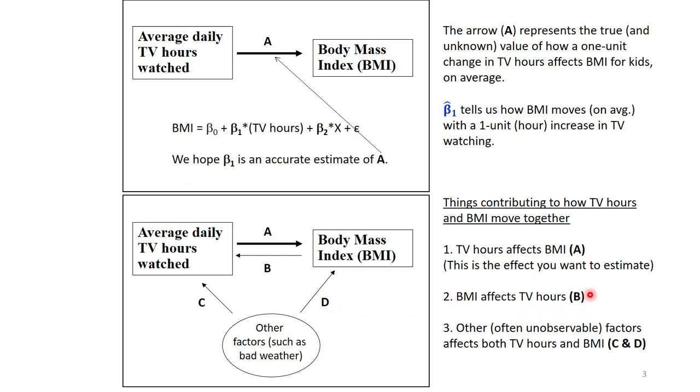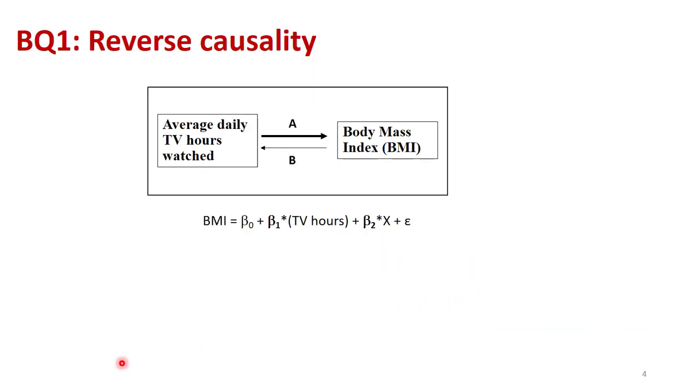We're going to take the reverse causality argument and bring that to the next slide. Here is that reverse causality and note that it could be positive or negative. Either one would produce a reverse causality and a bias.